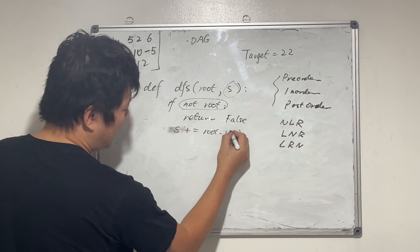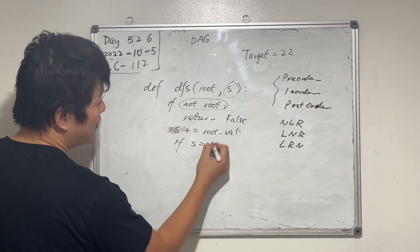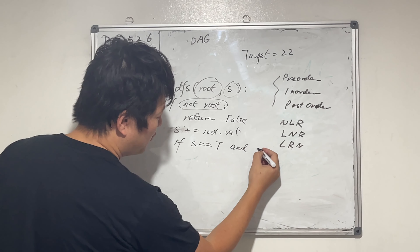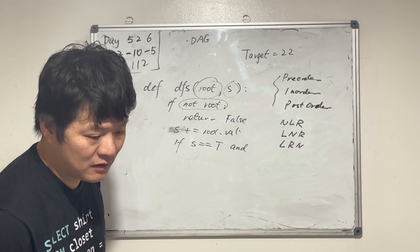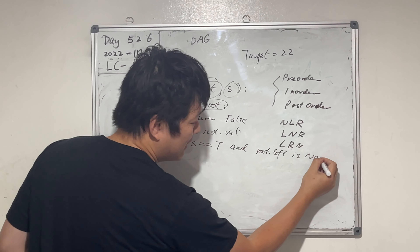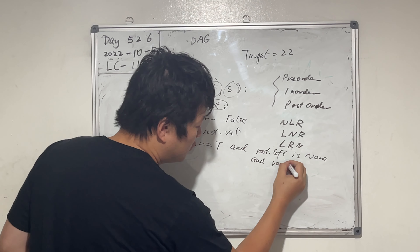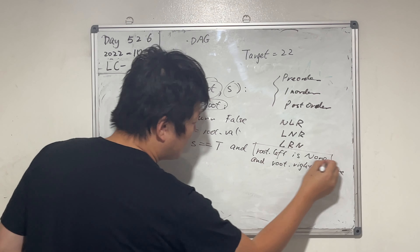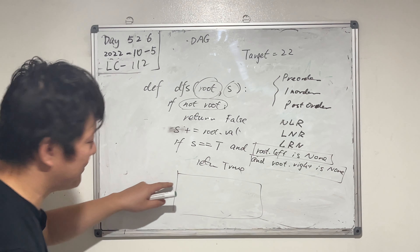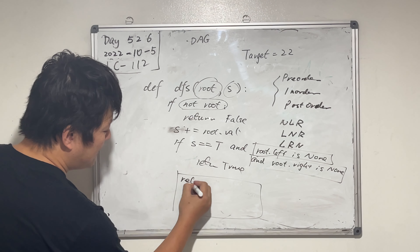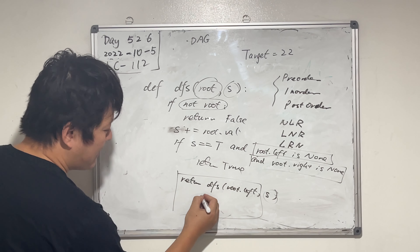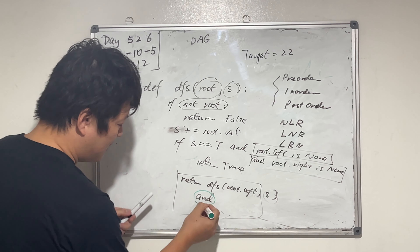Then we check if s equals target, and also check if the current root is a leaf node. To check if a node is a leaf node: root.left is None and root.right is None — or equivalently, if not root.left and if not root.right. Then return True.